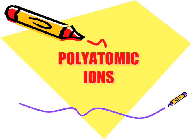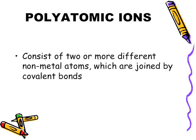Polyatomic ions consist of two or more different non-metal atoms which are joined by a covalent bond.